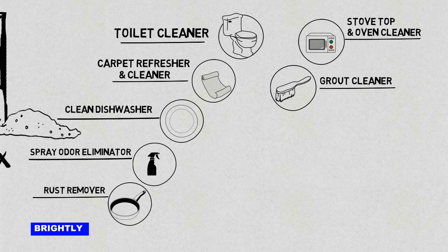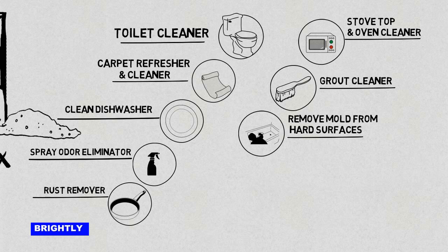8. Remove mold from hard surfaces: Add 1/4 cup of bleach, 1 1/2 cups of water, and 1 tablespoon of borax all mixed together and added to a spray bottle. Spray the cleaner onto the hard surface, let it sit for at least 30 minutes, and then scrub away the mold and mildew with a scrub brush or old toothbrush.